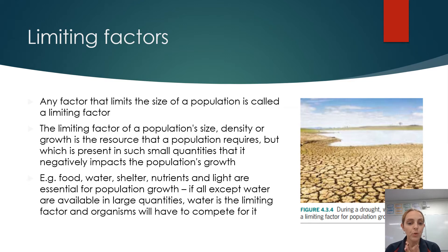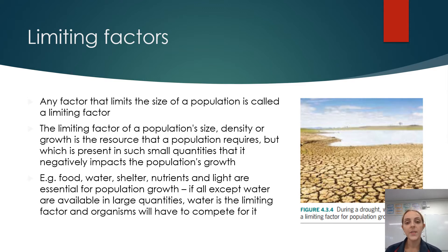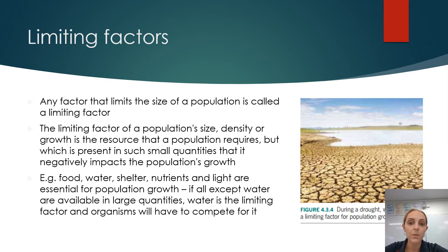For example, you might need food, water, shelter, nutrients, and light in a particular ecosystem. If all of those are available except for water, then water is the limiting factor. In figure 4.3.4, this would be typical of a drought environment where water is limited, and therefore the distribution of animals or numbers of species would be limited there.